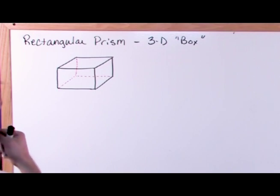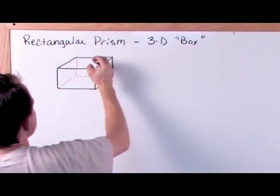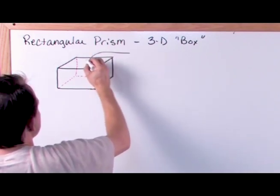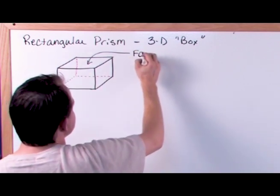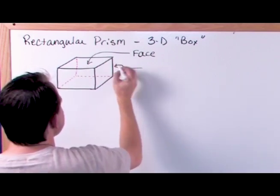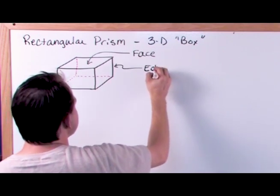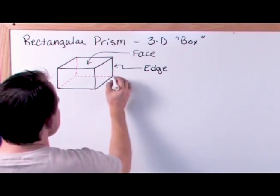So what we want to do is first define some terms, and then we're going to calculate the surface area of this prism. First thing I'm going to do is define some terms. One of these flat sides of this prism is called a face — one of the faces of this rectangular prism. This thing right here is called the edge.